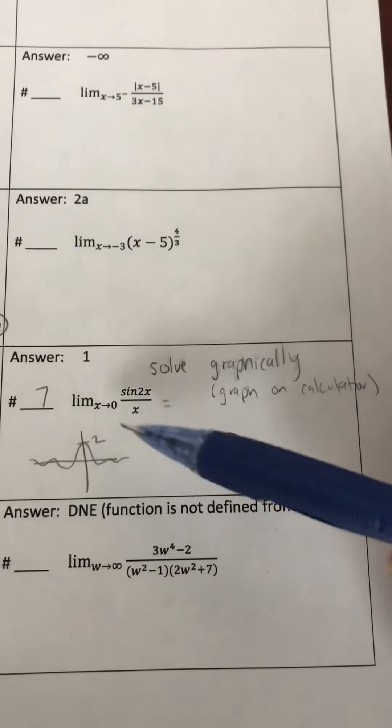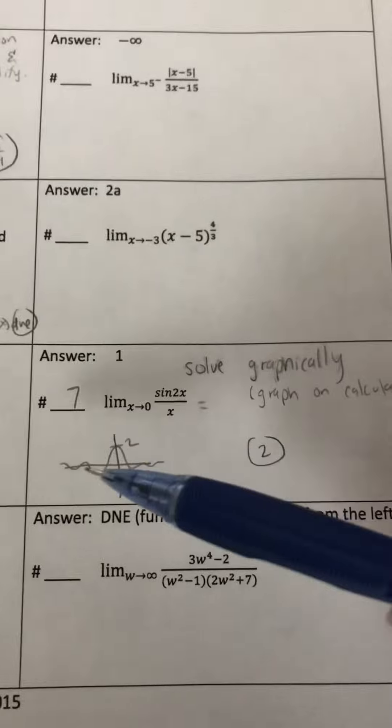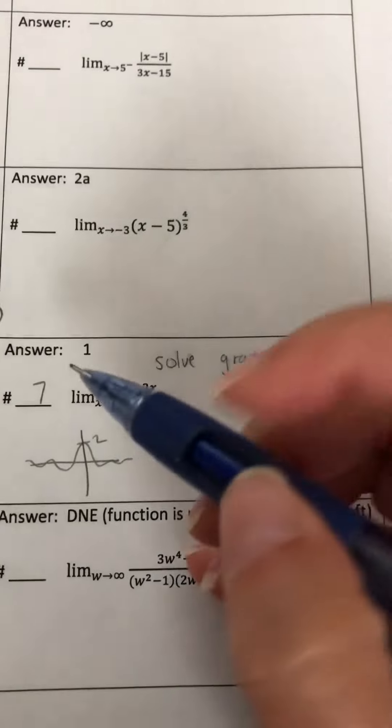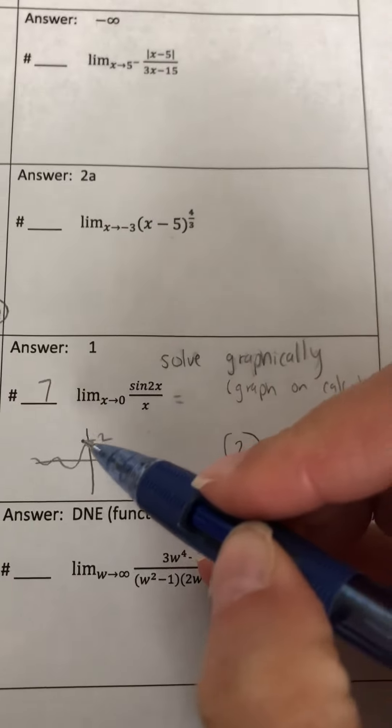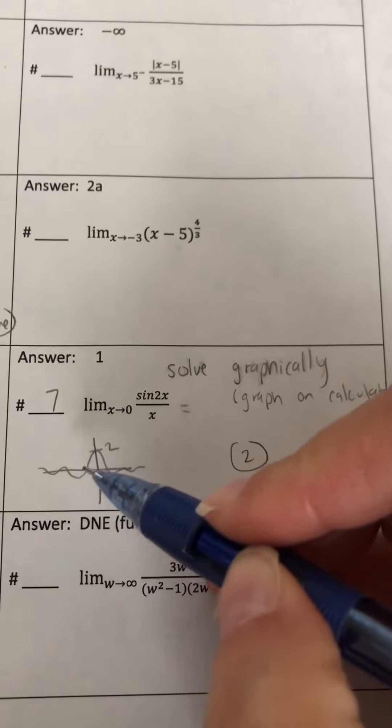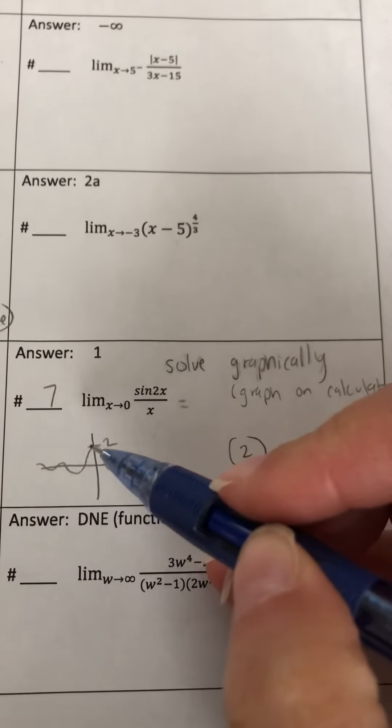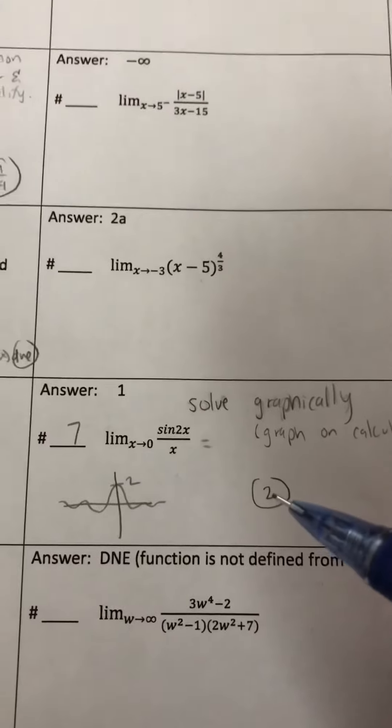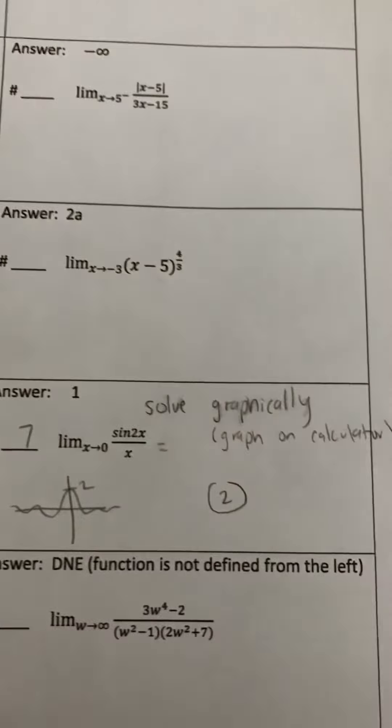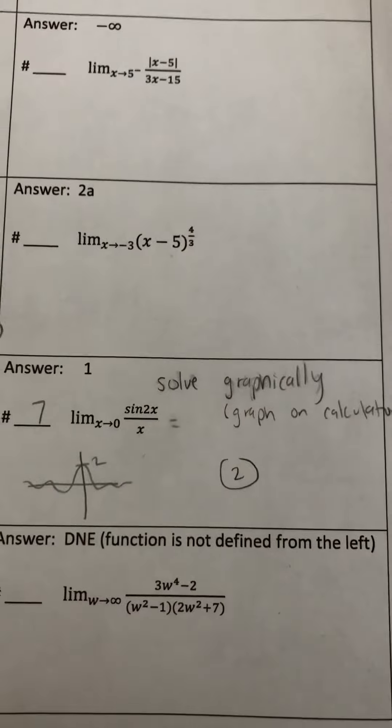So just graph this equation on your calculator. This one ends up looking like this. We're looking for the limit as x is approaching 0, so that would be 2 because the y value as you approach 0 is 2. Work through the circuit like that.